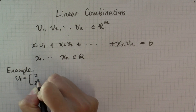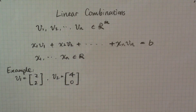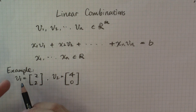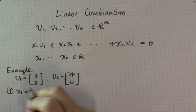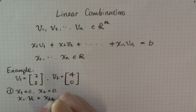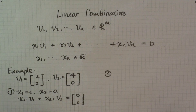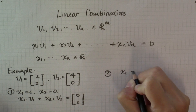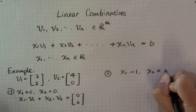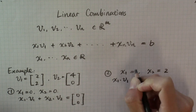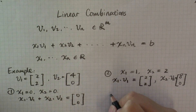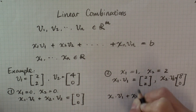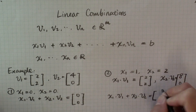Let me give you an example. Suppose we have v1 equal to (2, 2) and v2 equal to (4, 0). If we take x1 equal to 0 and x2 equal to 0, then x1·v1 plus x2·v2 is (0, 0). And remember, x1 and x2 can be any real numbers, so we have a lot of freedom. We can let x1 equal to 1 and x2 equal to 2. Then x1·v1 is (2, 2) and x2·v2 is (8, 0), so the linear combination is (10, 2).